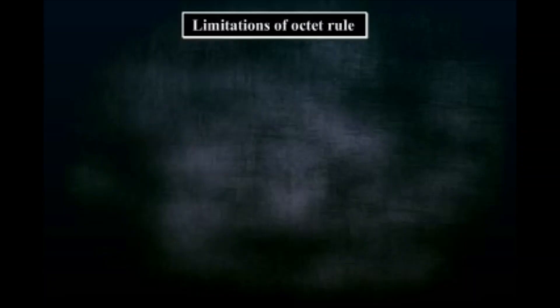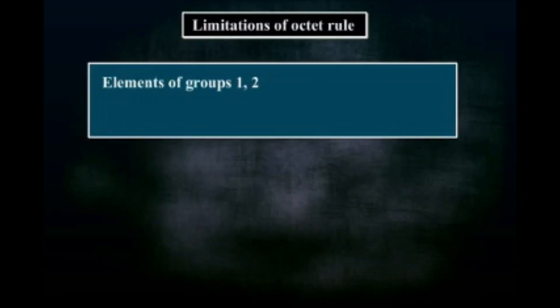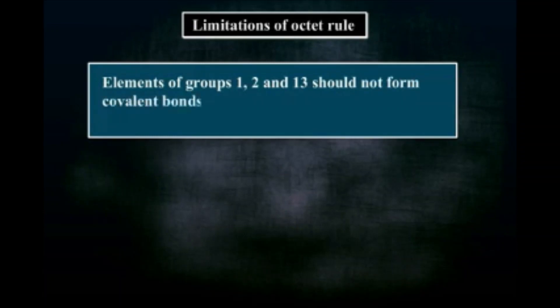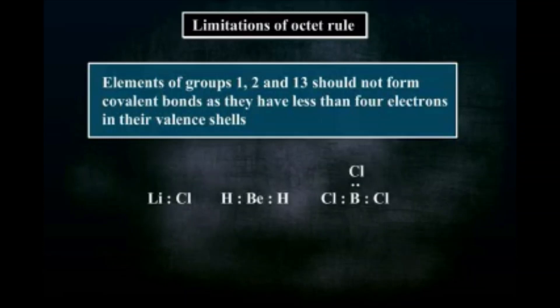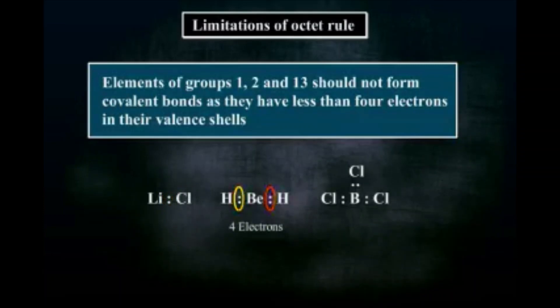Let us now discuss the limitations of the octet rule. The first limitation is that it states elements of groups 1, 2, and 13 should not form covalent bonds, as they have less than four electrons in their valence shells. However, looking at these structures — all covalent compounds — lithium has only two electrons, beryllium has four, and boron has only six electrons, so the octets of the central atoms are incomplete.